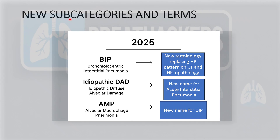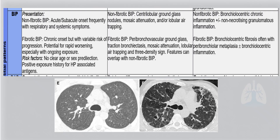To summarize the new terminologies: BIP is a new term replacing the HP pattern on CT and histopathology. Idiopathic DAD is a new name for AIP, and AMP is a new name for DIP. BIP can be fibrotic or non-fibrotic. The non-fibrotic form typically has an acute or sub-acute onset of respiratory or systemic symptoms, while the fibrotic form has a chronic onset with variable risk of progression. There is no clear age or sex predilection, but a positive exposure history for HP remains associated with the relevant antigens.